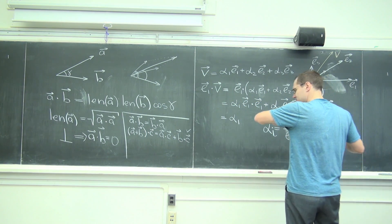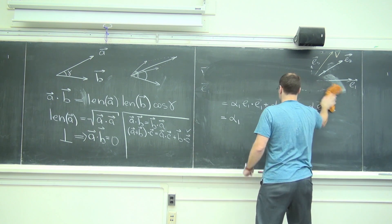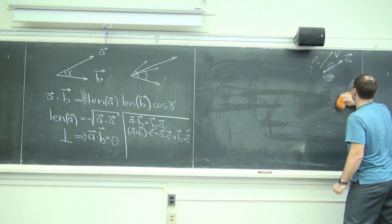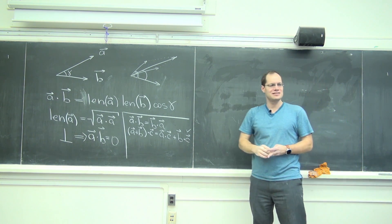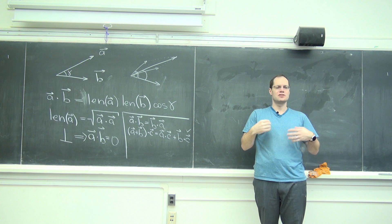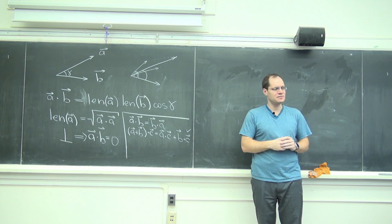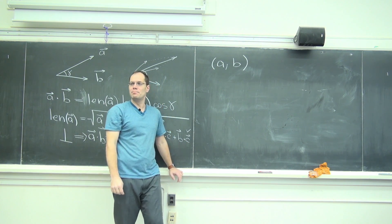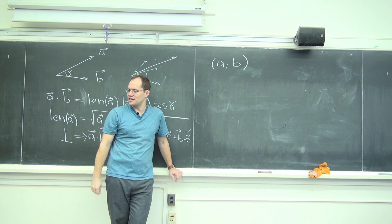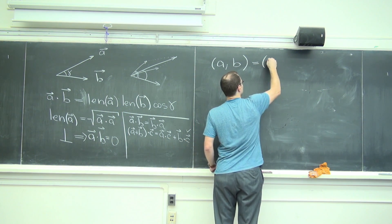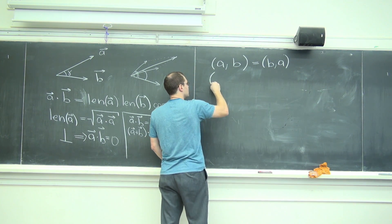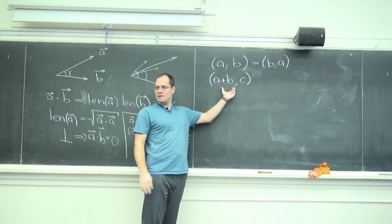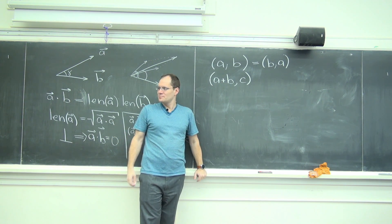I think this deserves to be written down, and then we'll call it a day. Instead of writing a dot b — which I personally reserve for geometric vectors — you write it as (a, b) in parentheses. I'm no longer writing an arrow above it because it's no longer necessarily geometric vectors. The properties that we need: (a, b) equals (b, a).